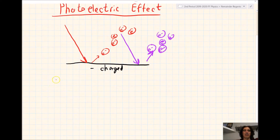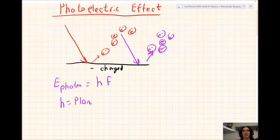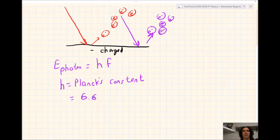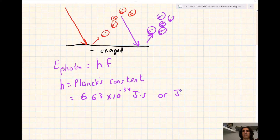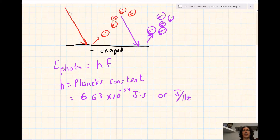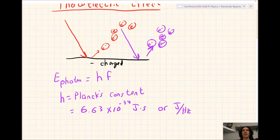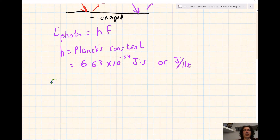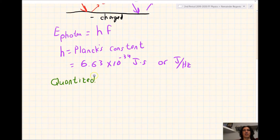So if we want to calculate this, we can calculate the energy of a photon, and that's equal to H times F. H is Planck's constant, and it can be found on the front page of your reference table. It's 6.63 times 10 to the negative 34 joules times seconds. This idea that the photons come in specific amounts of energy, thus releasing specific electrons when they hit the metal plate, is called quantum physics. And it was Einstein who came up with this idea.